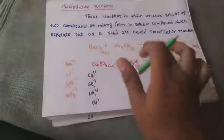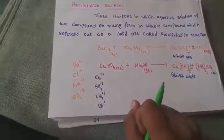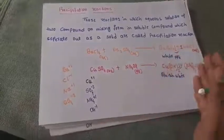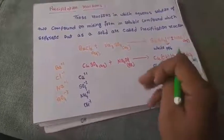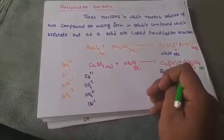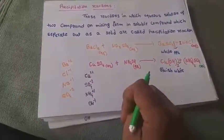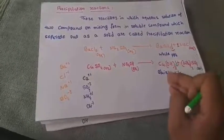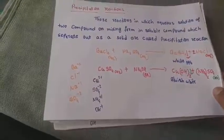Both examples — BaCl₂ + Na₂SO₄ and CuSO₄ + NH₄OH — are double displacement reactions and also precipitation reactions. To identify which product forms the precipitate and which stays in aqueous solution, there is a topic called solubility rules. Those rules will be shared with you — by using them you can easily identify which product is soluble and which is insoluble. These solubility rules will be studied formally in higher classes.